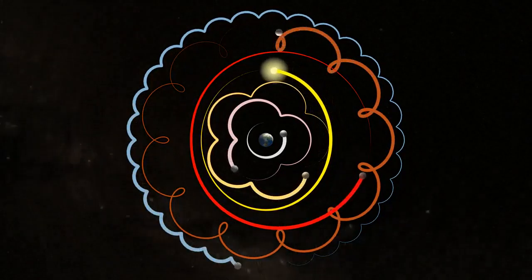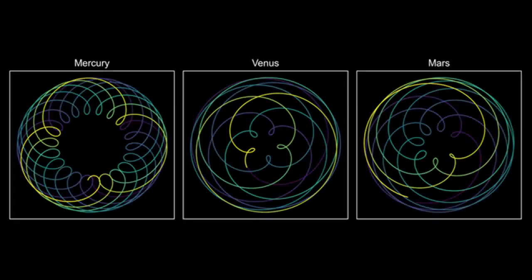Remarkably, the dimensions of the inner concentric circles of Bhumandala match the epicycle orbits of the inner planets: Mercury, Venus and Mars.